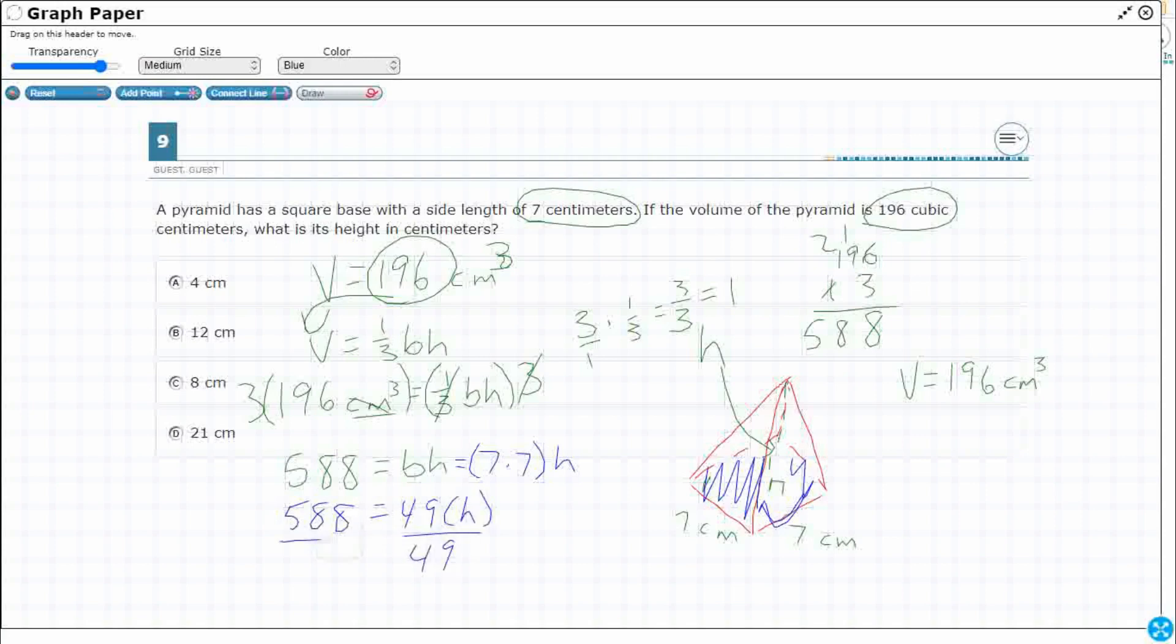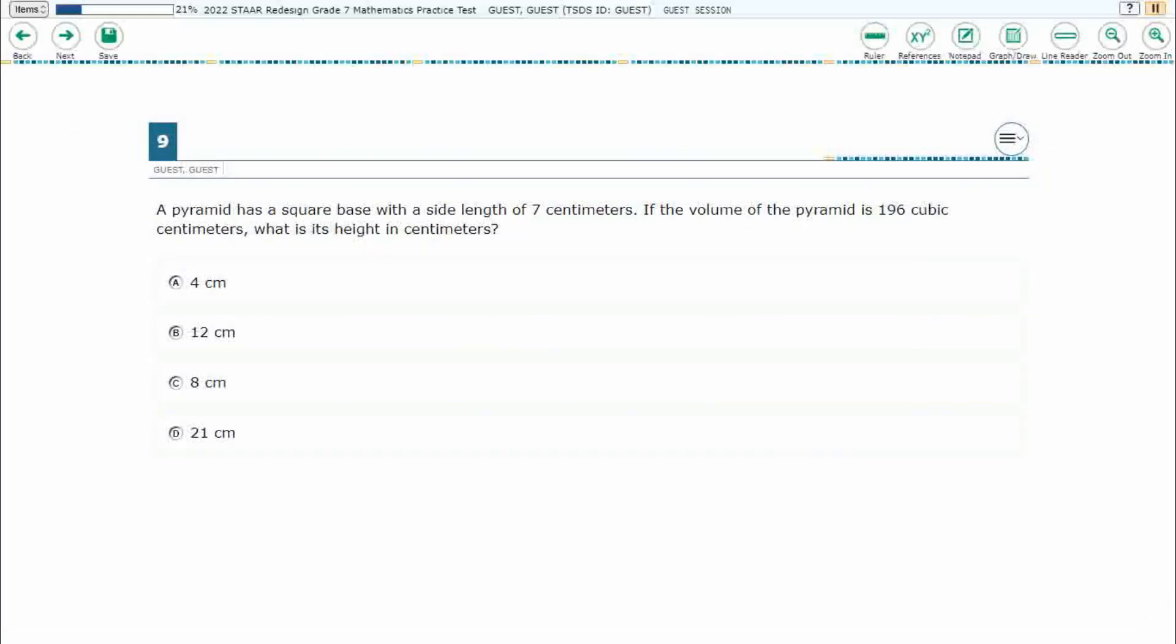So if I divide both sides by 49, I should get my height. What in the world is 49 into 588? No idea. Let's see. 588, 49 goes into 58 once. Hmm. Okay. Well, 98. Oh, that's pretty easy. It goes in twice. So there we go. My answer is B, 12.